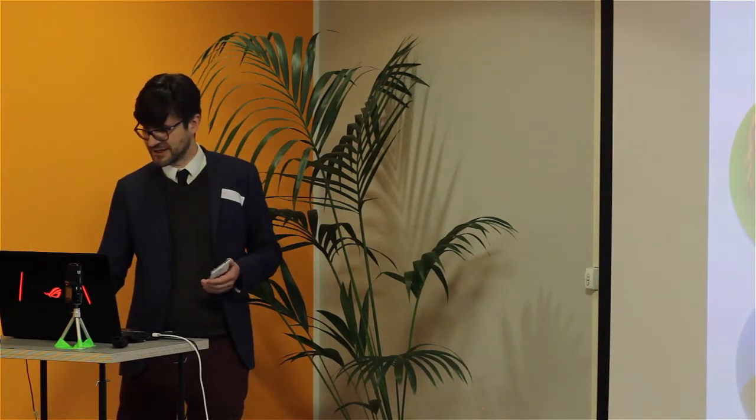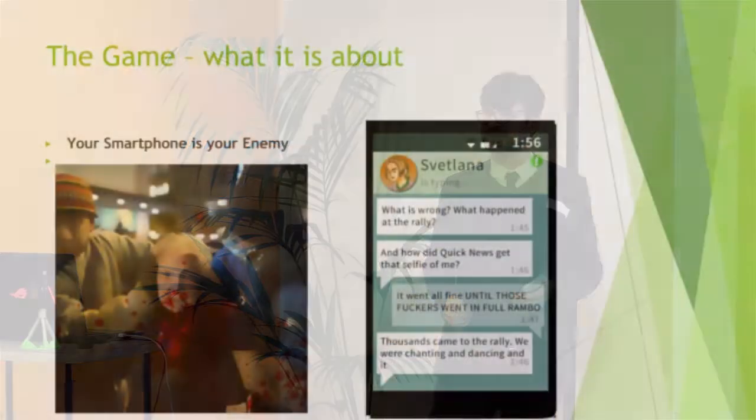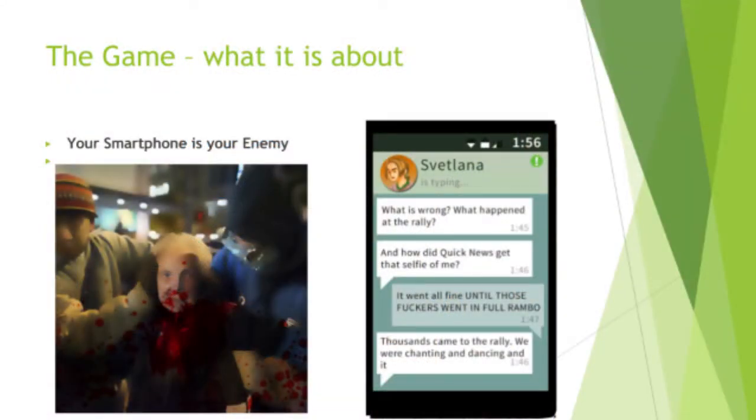But at the same time, these are all in-game graphics, by the way. It's also your enemy because you didn't encrypt your smartphone. You use an unencrypted chat. You have your browser history. And all these things in the game can be tracked by the government.